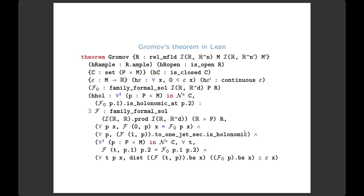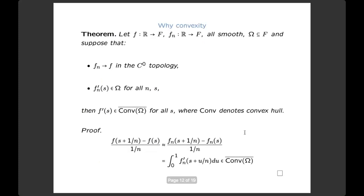I want to give a sense of how convexity arises. Here's the simplest toy example. Consider maps from ℝ into a real normed vector space F, smooth approximations Fₙ tending to F in the C⁰ topology, and an open set Ω in F. Think of F and Fₙ as derivative maps, and Ω as the set where the derivative doesn't vanish — in one dimension that's the immersion condition, or in higher dimensions where the derivative is injective.